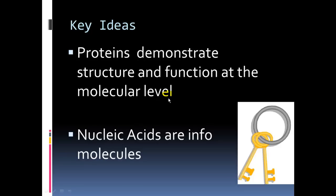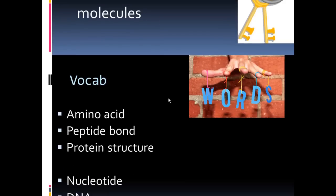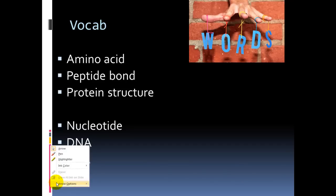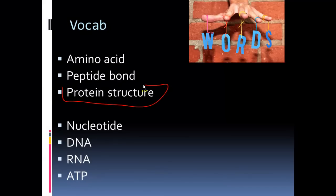Vocabulary words: amino acid—the building block or monomer of proteins; peptide bonds—bonds that form protein structure, probably one of the most abstract concepts; nucleotide—the subunit of a nucleic acid; DNA, RNA, and ATP are three examples of nucleic acids, though ATP is actually a nucleotide.